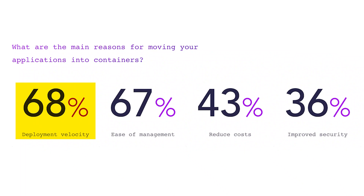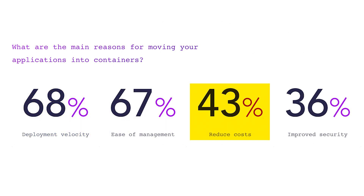More seriously, 68% of respondents viewed deployment velocity as a major reason behind their move to containers, whereas 67% cited ease of management and 43% cited reduced costs. But really interestingly, 36% cited improved security. This is interesting when you consider that containers are universally considered less secure than virtual machines. What I think we're seeing here is the incredible set of tools built around containers that provide a better overall security posture — like image vulnerability scanning, where you scan your images for known vulnerabilities and can implement logic into your delivery pipelines to automate how those vulnerabilities are handled.